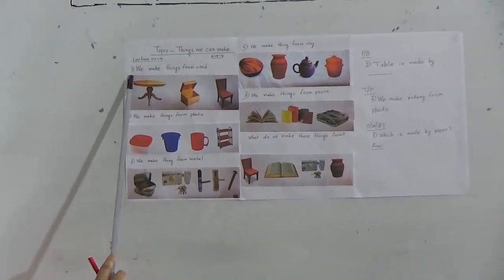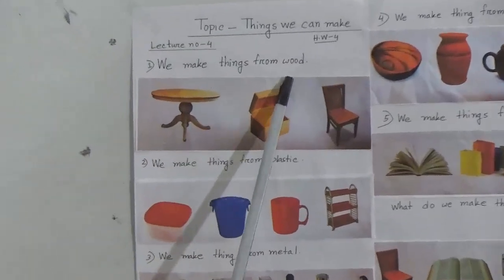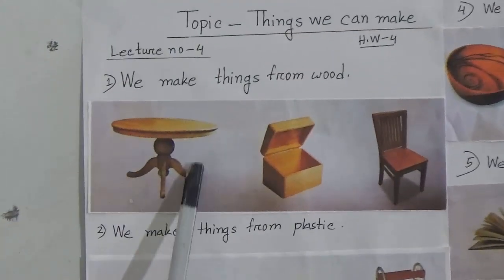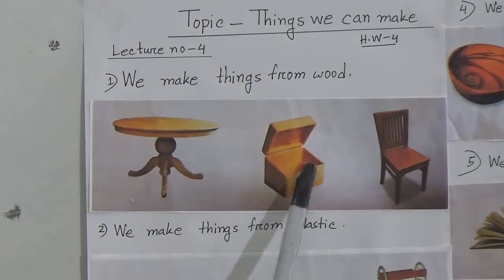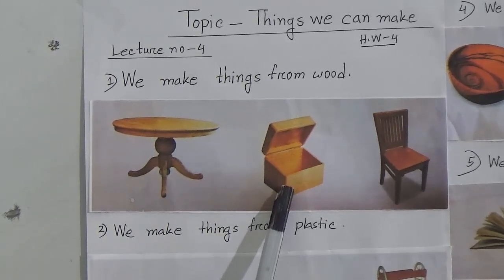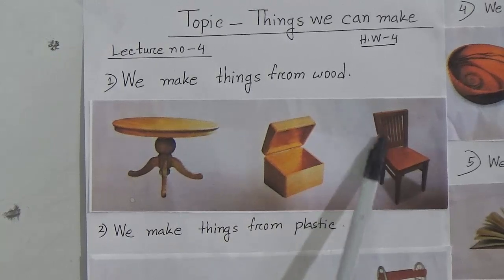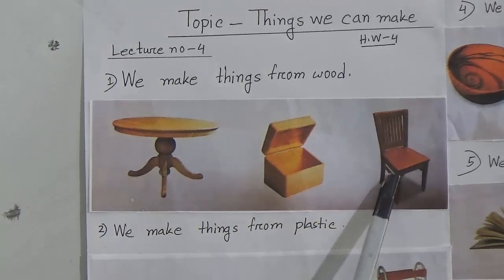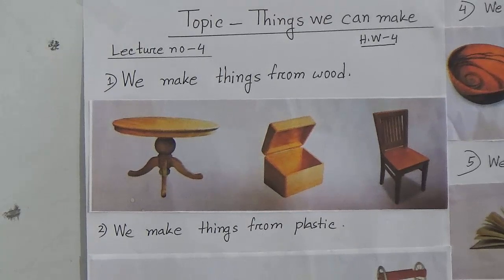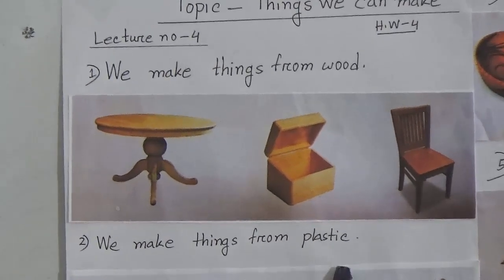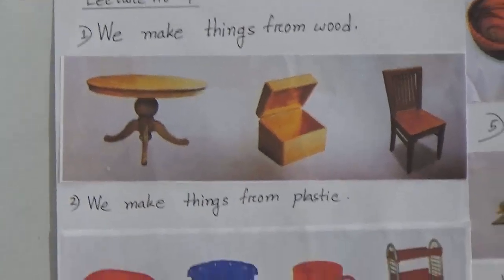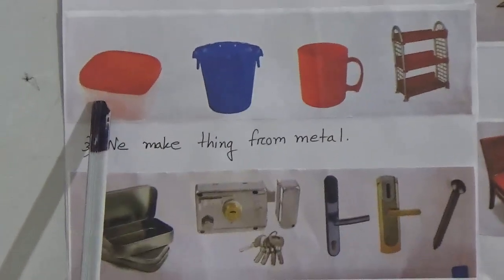Point number one: we make things from wood. You can see here is a table — this is made from wood. Here is a big box — this is also made from wood. And here is a chair — this is made from wood.